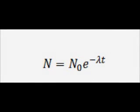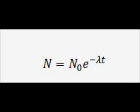This time what I'm going to attempt to do is derive the radioactive decay equation. In this equation, n is the number of nuclei that we have at a particular point that we're measuring. n0 is the number of nuclei we started off with — so before we started timing, that was the number of undecayed nuclei that we had.